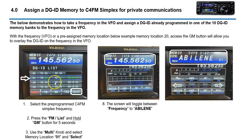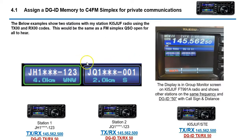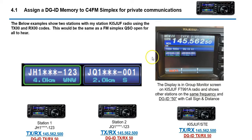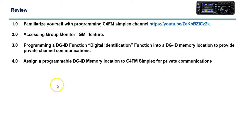This section shows how to take memory location 20 and go in and select Digital ID — for example memory location number 1 which has a code of 50 transmit and 50 receive. You would go in, select number 1, click Select, and so forth. Once you have the code set to memory location 1 with a DGID of 50/50, if you go back to Group Monitor you would see 50-50. Stations talking to you would also need to be on 50/50. To summarize: program memory location 20, access Group Monitor, program a Digital ID into one of the 10 memory locations, and assign it to the simplex frequency.